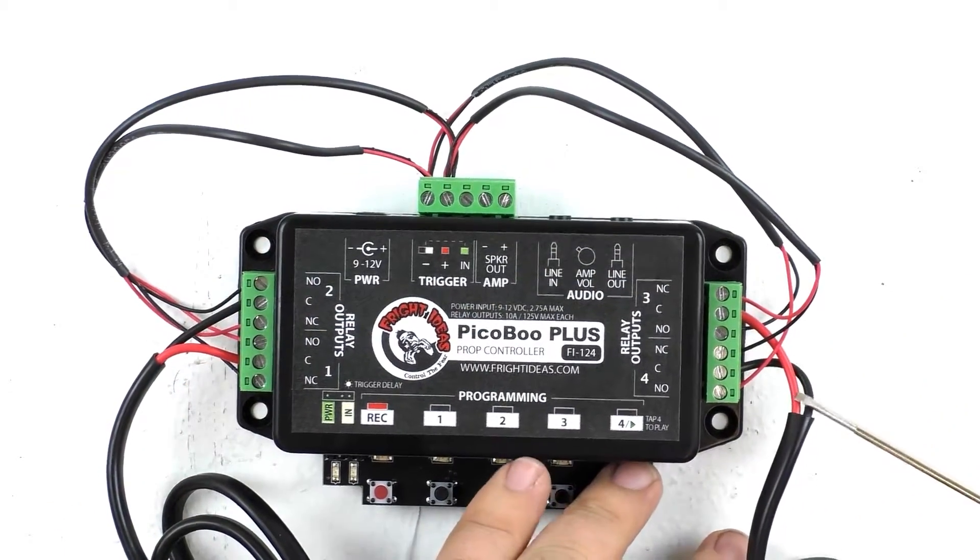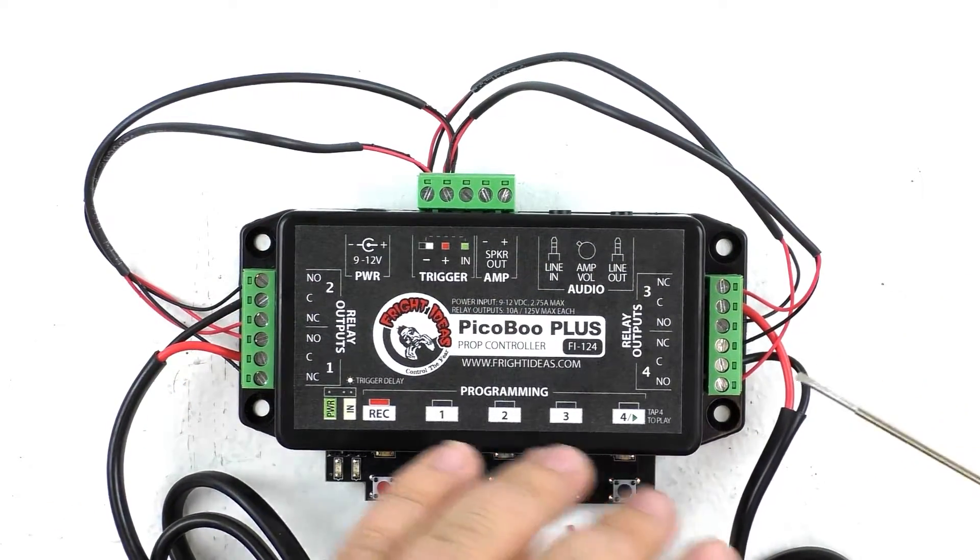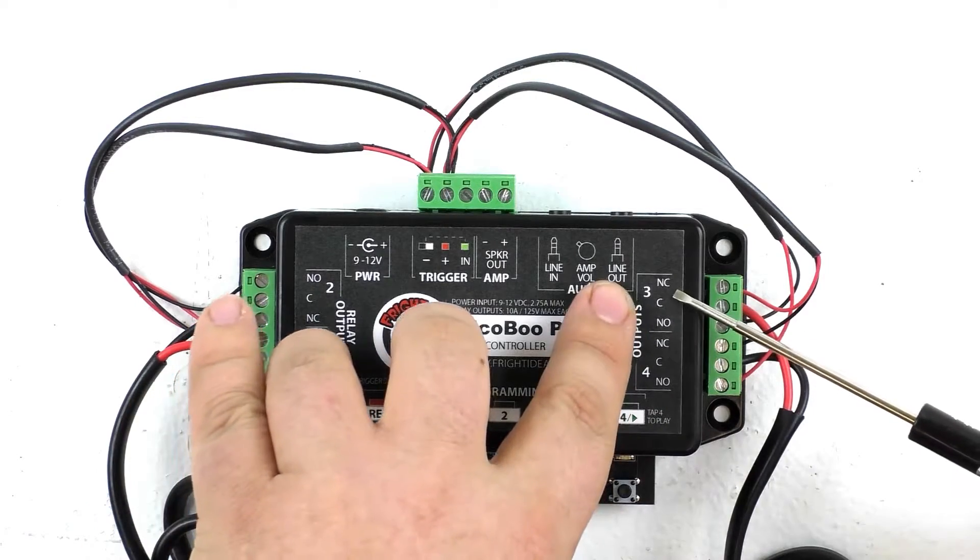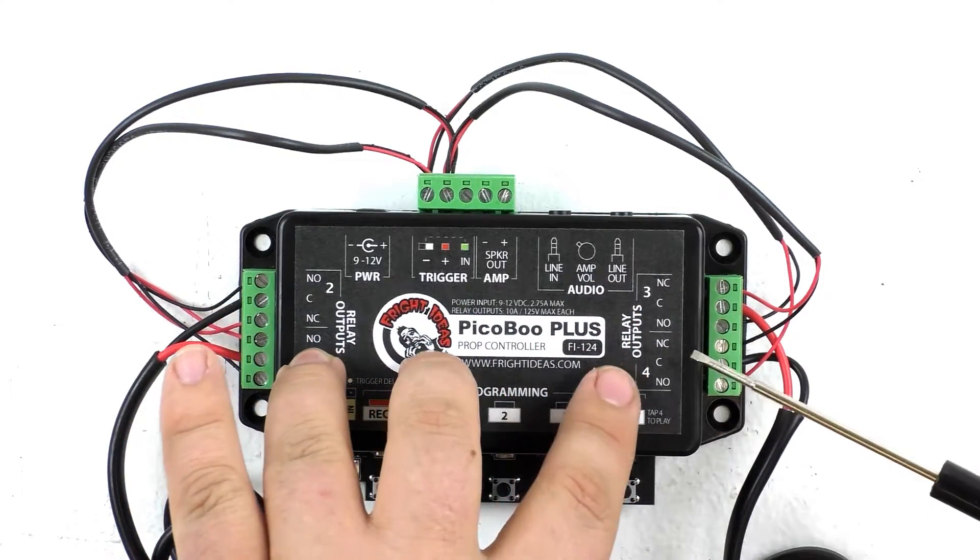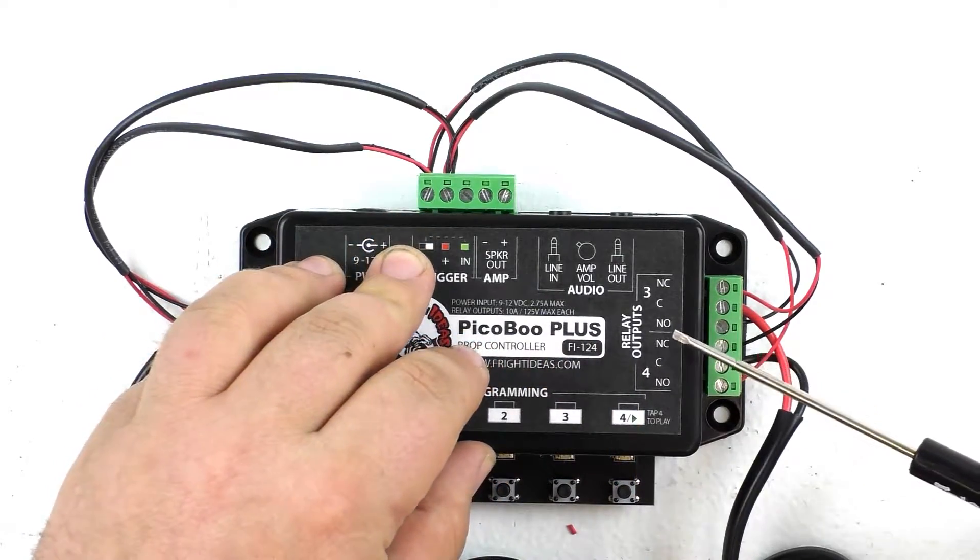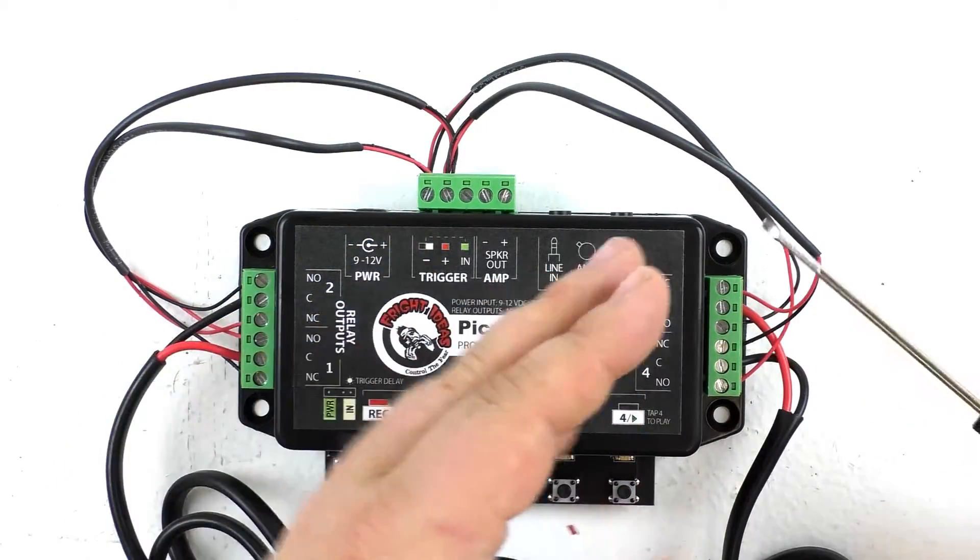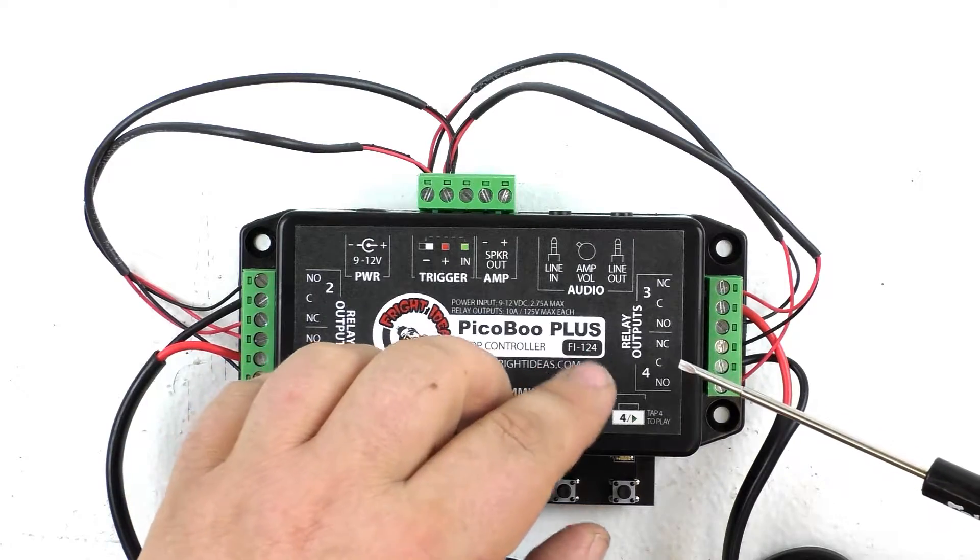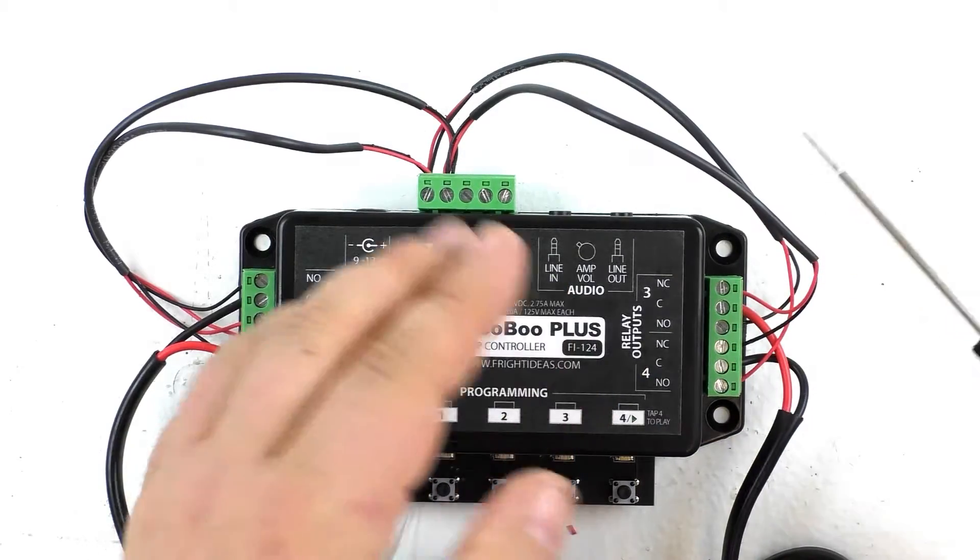On the other side we have the power wires from the other linear actuator here coming in, positive going to C on relay output 3, negative going to C on relay output 4. So when we activate relay output 3, the second linear actuator will extend, and when we activate relay output 4, the second linear actuator will retract.